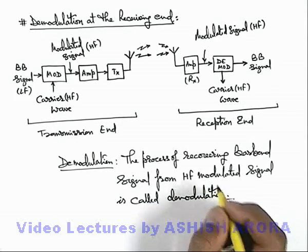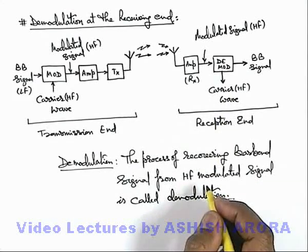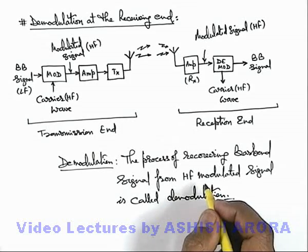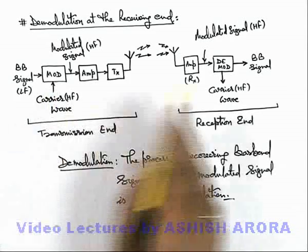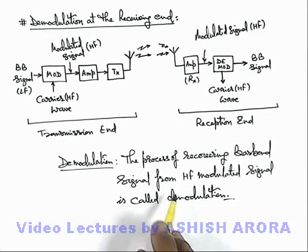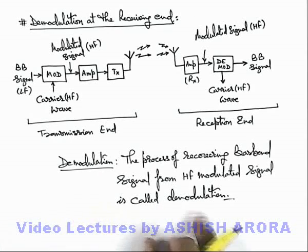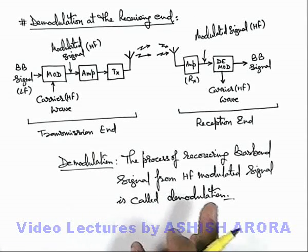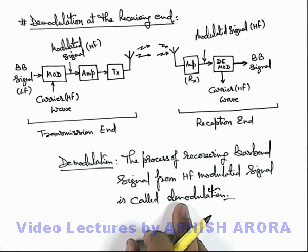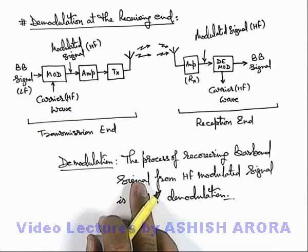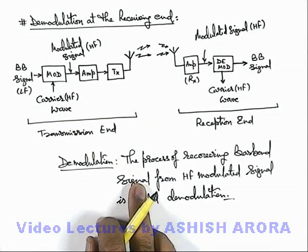And the device which is used for this purpose is called demodulator. The electronic working of modulator and demodulator is beyond the scope of these lectures. In advanced sections for engineering physics in Physics Galaxy we will talk about the electronic circuitry of modulator and demodulator, how these are practically working.